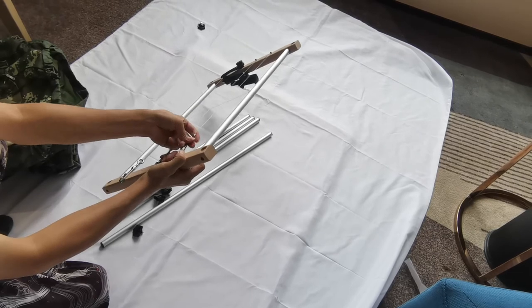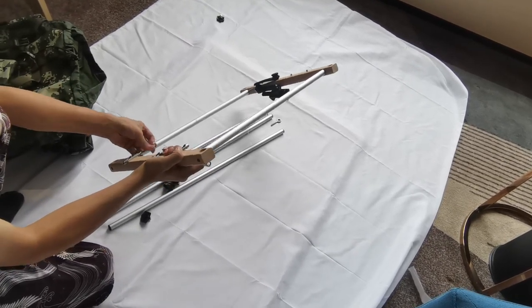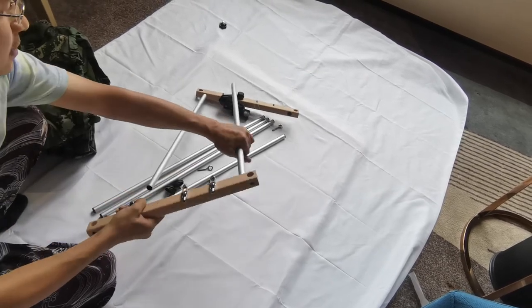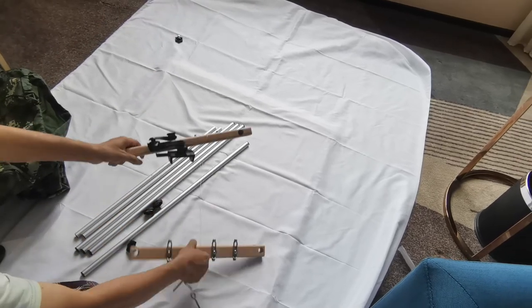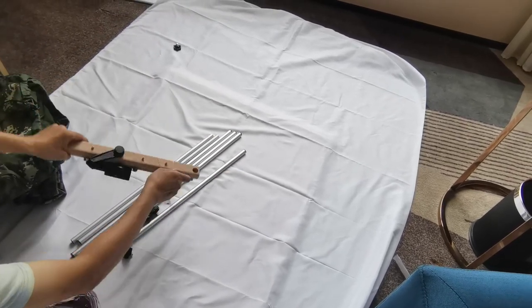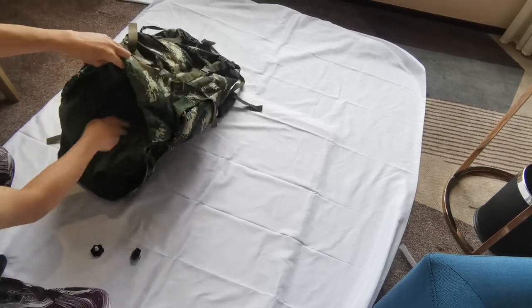You could further loosen the fishing lines and disassemble the reading stand completely to bundle of rod-shaped members just like this, which are able to be put into a big backpack. The longest rod is 70 centimeters.